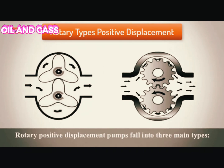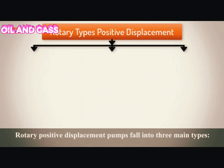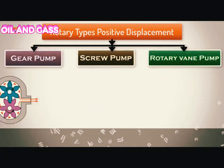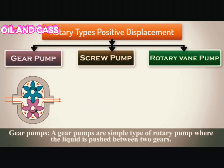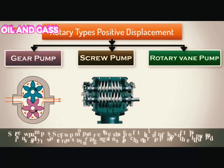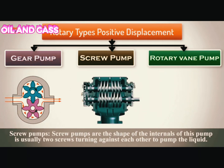Rotary positive displacement pumps fall into three main types. Gear pumps are a simple type of rotary pump where liquid is pushed between two gears. Screw pumps have an internal shape usually consisting of two screws turning against each other to pump the liquid.